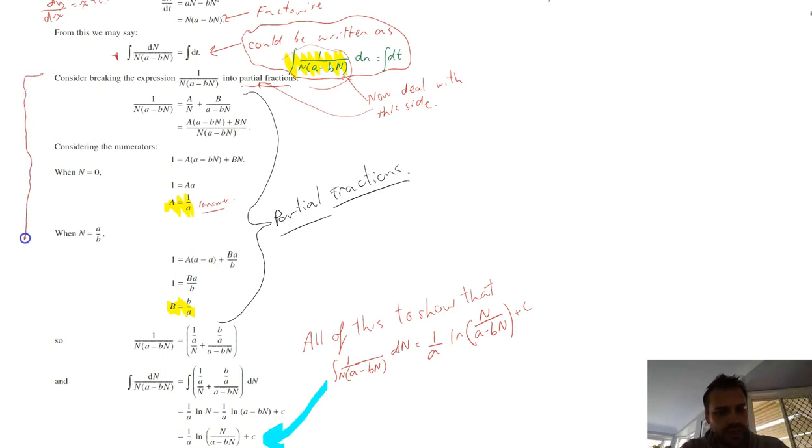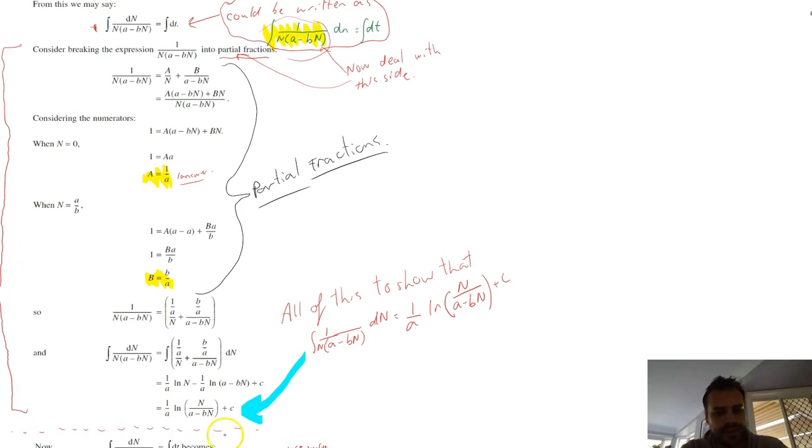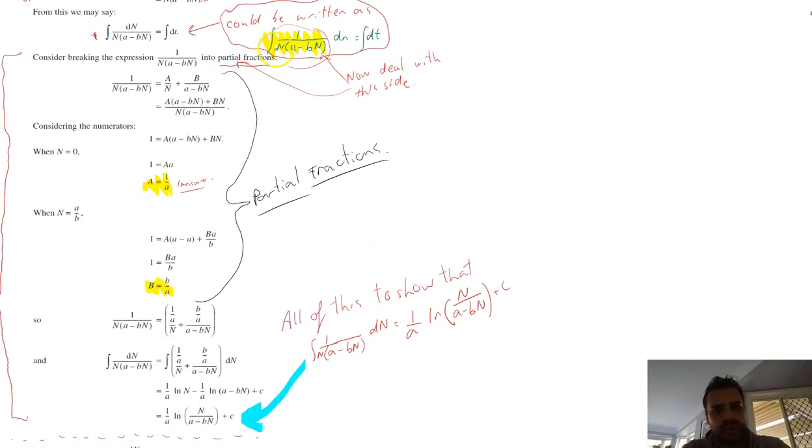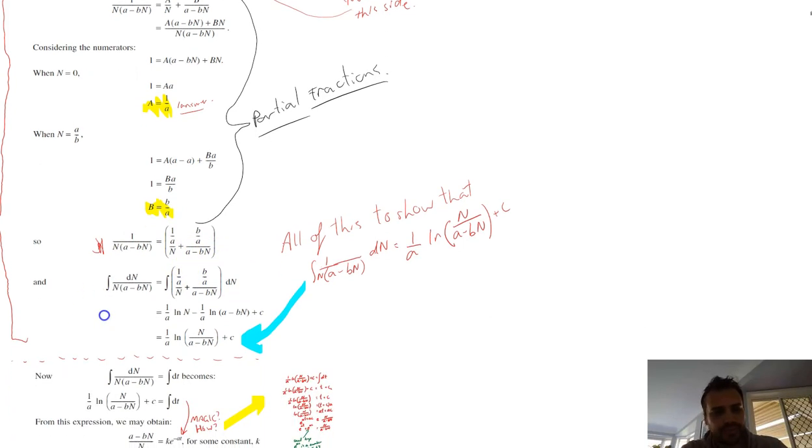Now, I am not going to run through the partial fractions bit. You've done partial fractions before. So eventually, using partial fractions, you'll end up here because by using partial fractions, you can find that 1 on n a minus bn, so this step here, is equal to 1 on a on n plus b on a on a minus bn. And then you can step through here, integrate that, integrate this, and you'll end up at this step, and here we are.